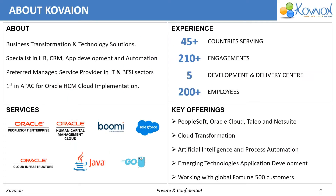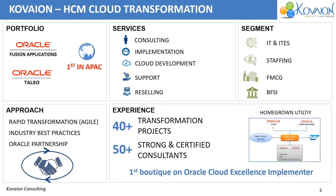Covion is a business transformation and technology solution partner specializing in HR, CRM and application development. With respect to cloud, we are the first to implement HCM Cloud in the APAC region. We have strong and certified consultants and project managers with 45 plus transformation projects. Our approach is agile methodology, following best practices in the industry.